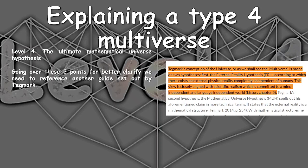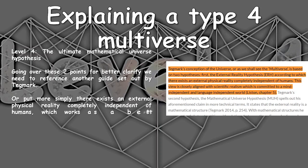Tegmark's conception of the universe — or as we shall see, the multiverse — is based on two hypotheses. First, the External Reality Hypothesis (ERH), according to which there exists an external physical reality completely independent of humans. This view is closely aligned with scientific realism, which is committed to a mind-independent and language-independent world. Put more simply: there exists a physical reality completely independent of humans. So instead of using Plato's realm of ideas, you just say that there is a realm beyond physical humans — this works in a much more general sense.